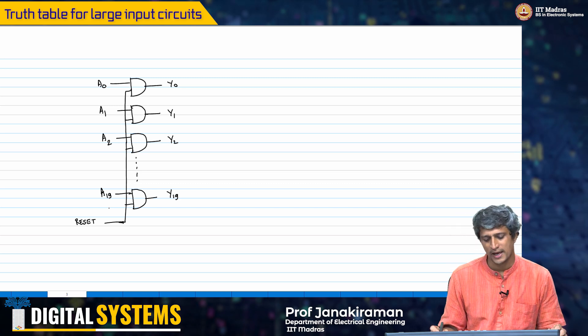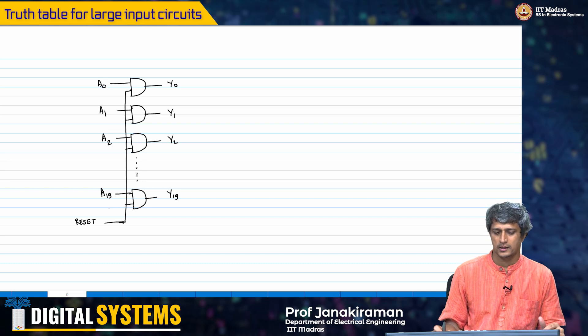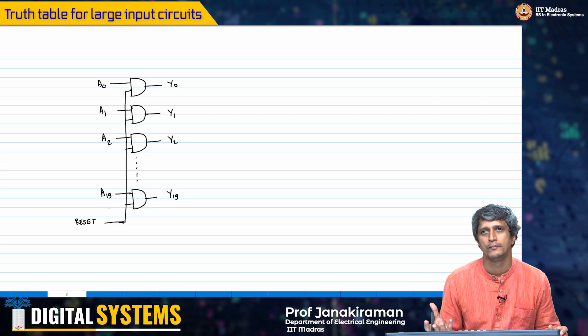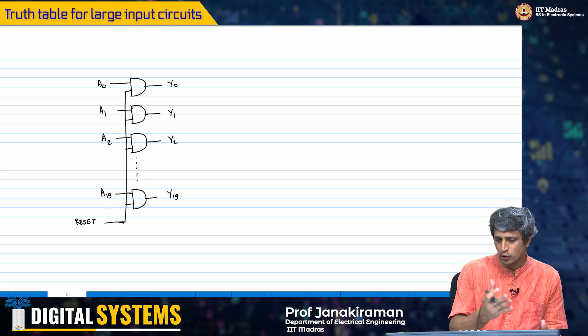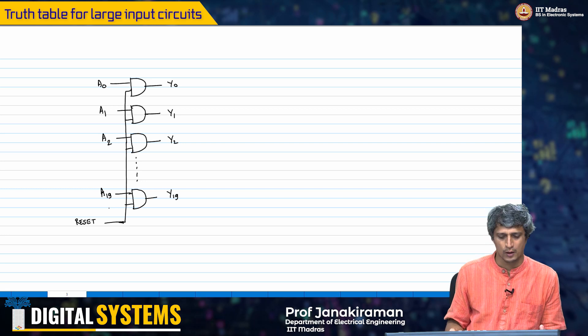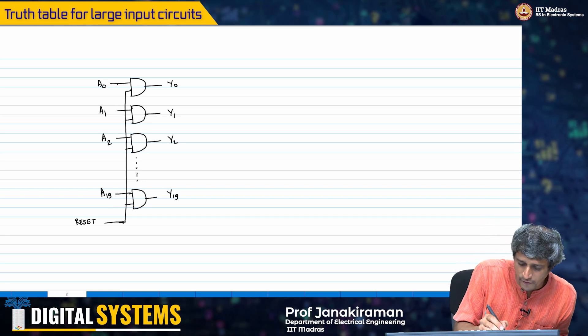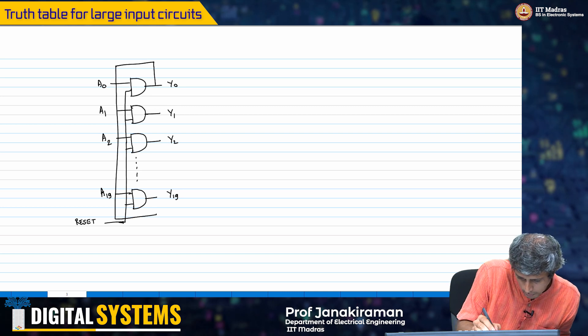Let's say for example the reset, if it is 0, then I want all the outputs to go low. So if I were to try to define a truth table for this, what would you do, just like in the previous case?